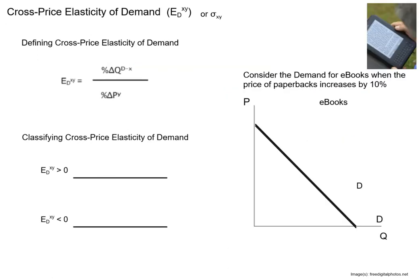Another elasticity we can consider is the cross-price elasticity of demand. I'm going to use XY for the two different goods and ED. You might also see sigma used as a common notation. This is where we define economic substitutes and economic complements. Again, there's no absolute value in this formula, so this calculation is going to produce either a positive or a negative value — one for complements and one for substitutes.